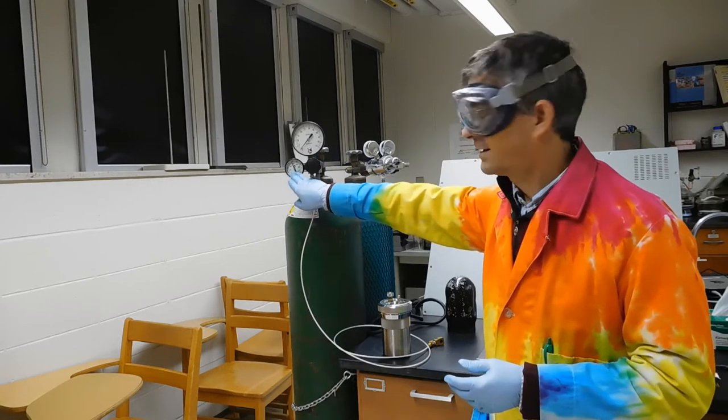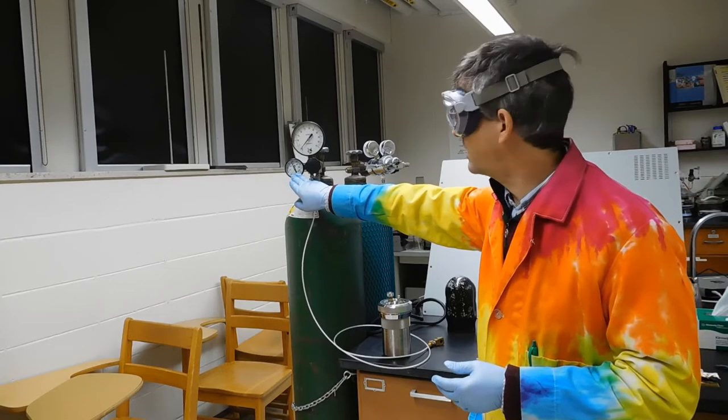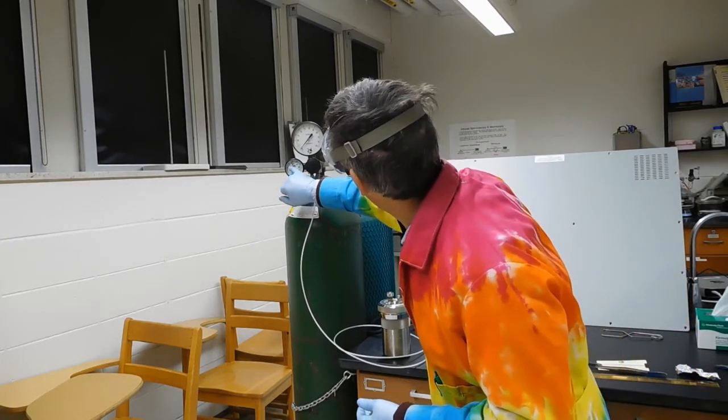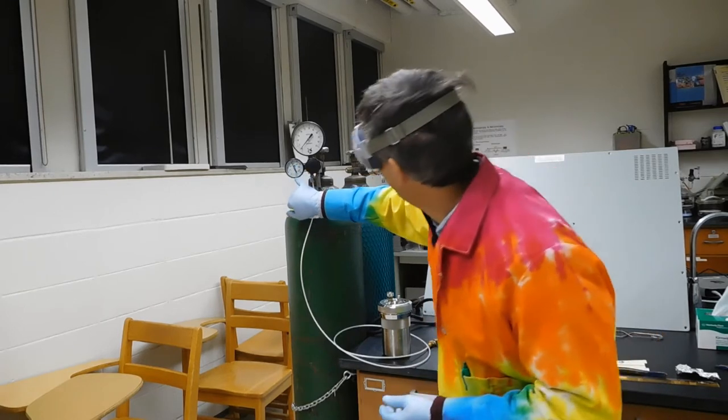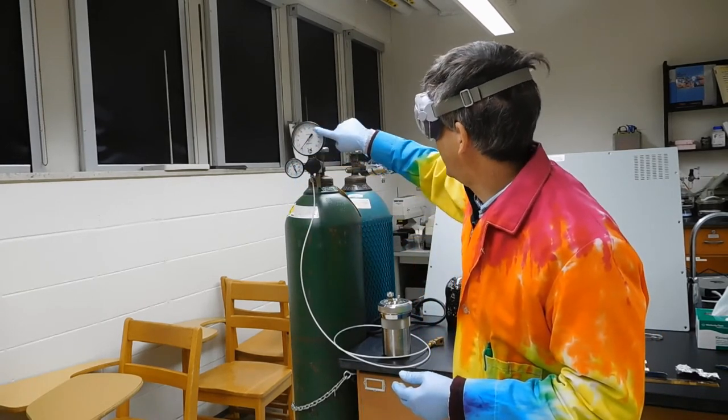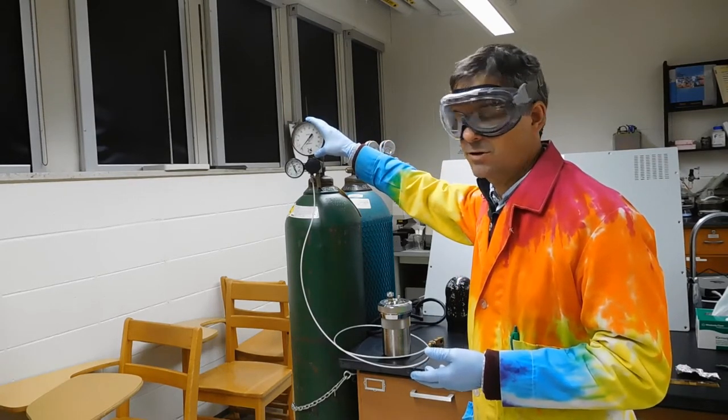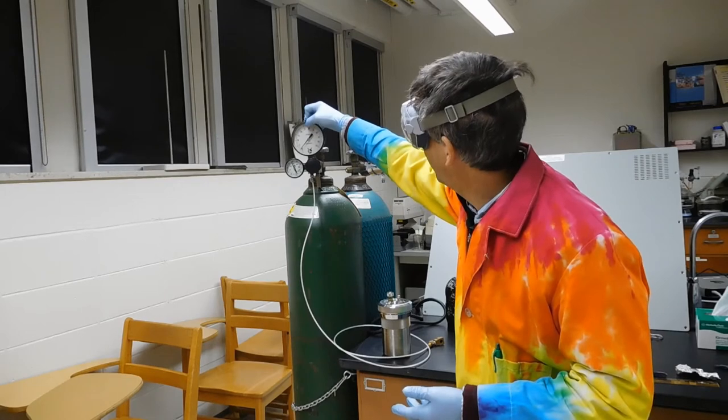The small dial here indicates the total pressure in the tank at the moment, and it's a little less than 1500 psi. This big gauge is going to tell us the atmospheres of oxygen we put in here. We're going to go to about 26.